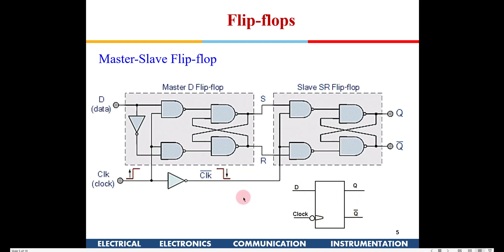Since it is a negative edge triggered flip-flop, a bubble is placed at the clock input in the symbol. The triangle indicates that it is a clock input — meaning it is a flip-flop. This is the symbol for a negative edge triggered master-slave flip-flop. It must be very clear how this operates: the data D is sampled only during the negative edge of the clock.